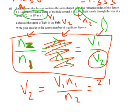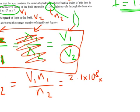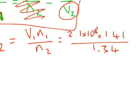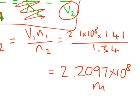So, V2 will equal V1 N1 over N2. And if we plug the values into there. V1 is 2.1 times 10 to the 8 meters per second. N1 times 1.41 and divided by 1.34 to get a final speed of 2.2097 times 10 to the 8 meters per second. And it's the correct number of significant figures.